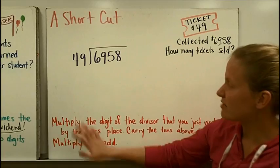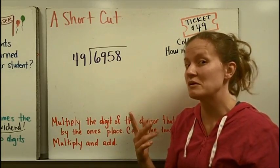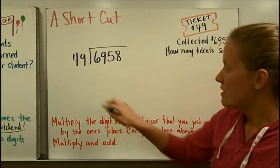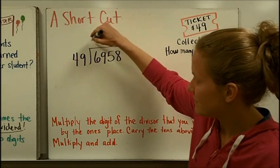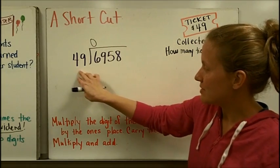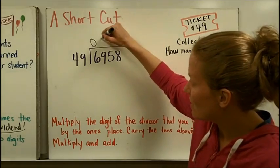In this shortcut, you can multiply. Actually, let's begin, and then when we get to where the shortcut will help us, I'll tell you. So $49, how many times can it go into $6? None. How many times can it go into $69? Looks like once to me.